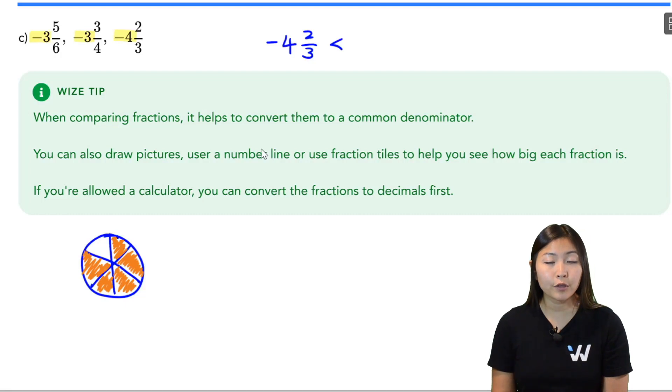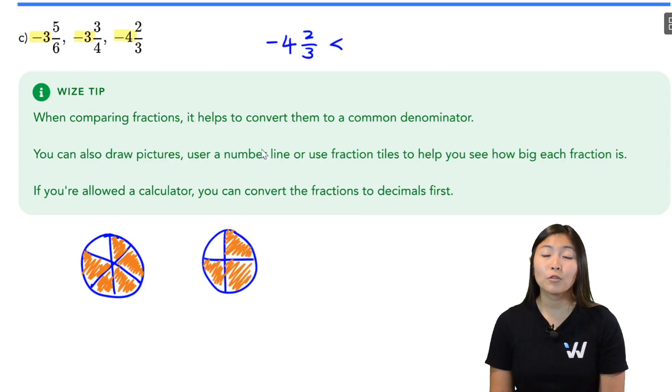Now do the same thing for 3 fourths, 3 quarters. So I draw a circle, split it into four equal slices. Now I'm going to shade in three of them. So if these were two pizzas, which one would I have more pizza slices in? Well, this one, right? Because it has a smaller gap. So 5 sixths is bigger than 3 fourths.